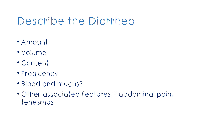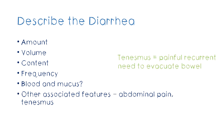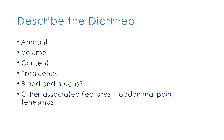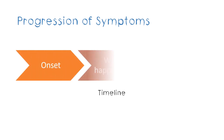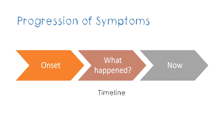Then ask if there were any other associated features. Especially in an older child, we can ask about abdominal pain and tenesmus, meaning a painful recurrent need to evacuate bowel. After we get a good idea about the characteristics of the diarrhea, we have to describe what happened to these features over time. This is especially important for long-standing conditions, but you should mention how these symptoms progressed. You can describe this like a story with a timeline so that the person listening can picture what happened to the child with time.